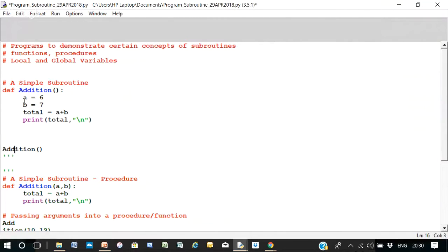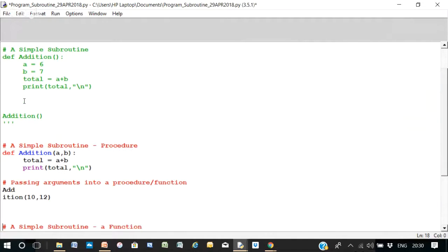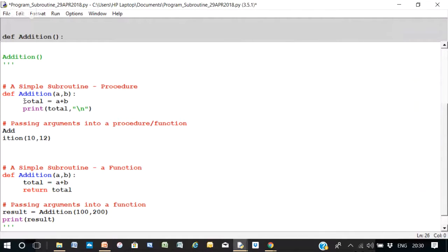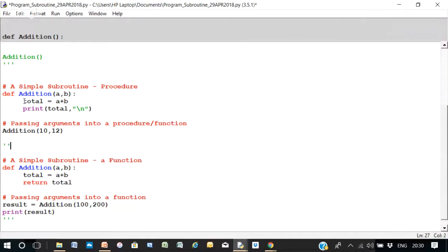Now I'm going to comment that out and we're going to run another subroutine here. Now let's just look at this. This is another subroutine, but this is known as a procedure. It will become apparent why it's a procedure technically. But in Python, subroutines, procedures, functions are all known as functions.